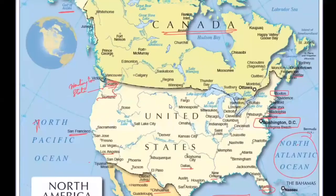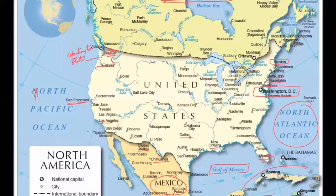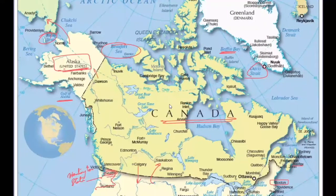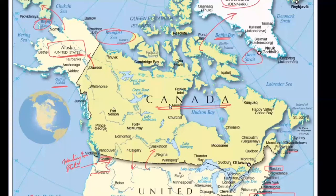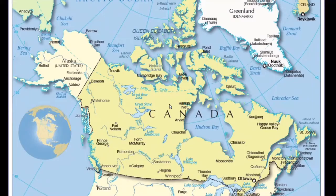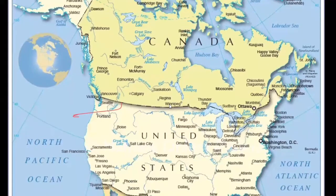Looking at boundaries — the neighbors of the United States are Canada on one side and Mexico on the other. Alaska is separated from Russia through the Bering Strait. Canada has neighbors on two sides from the US, and Denmark is also a neighbor. Mexico's northern neighbor is the United States, and to the south are Guatemala and Belize. Cuba is nearby. The boundary between the US and Canada is a straight line known as the 49th parallel.